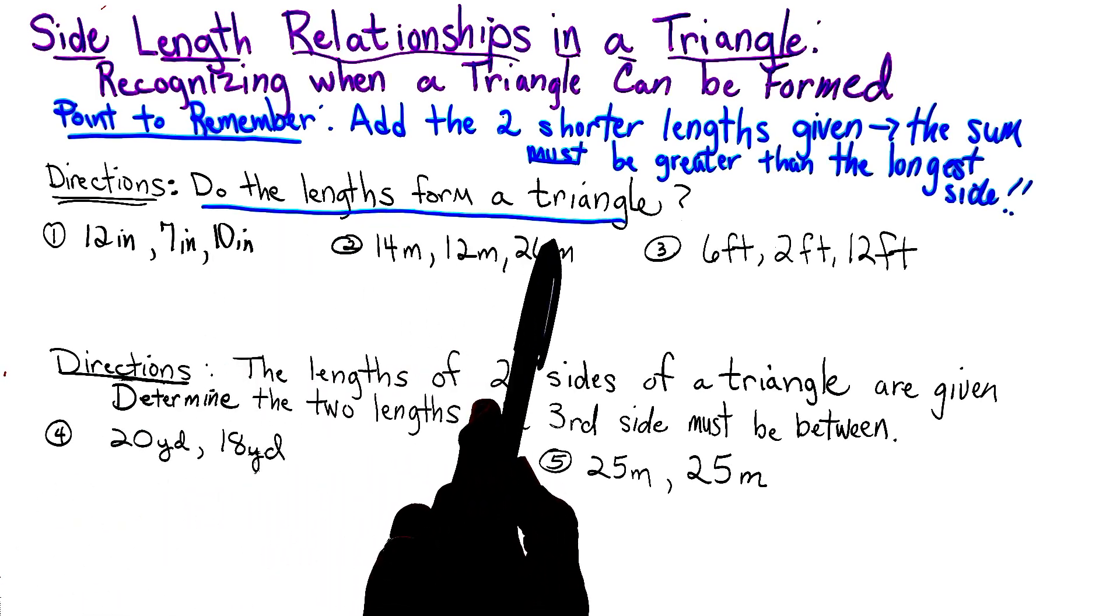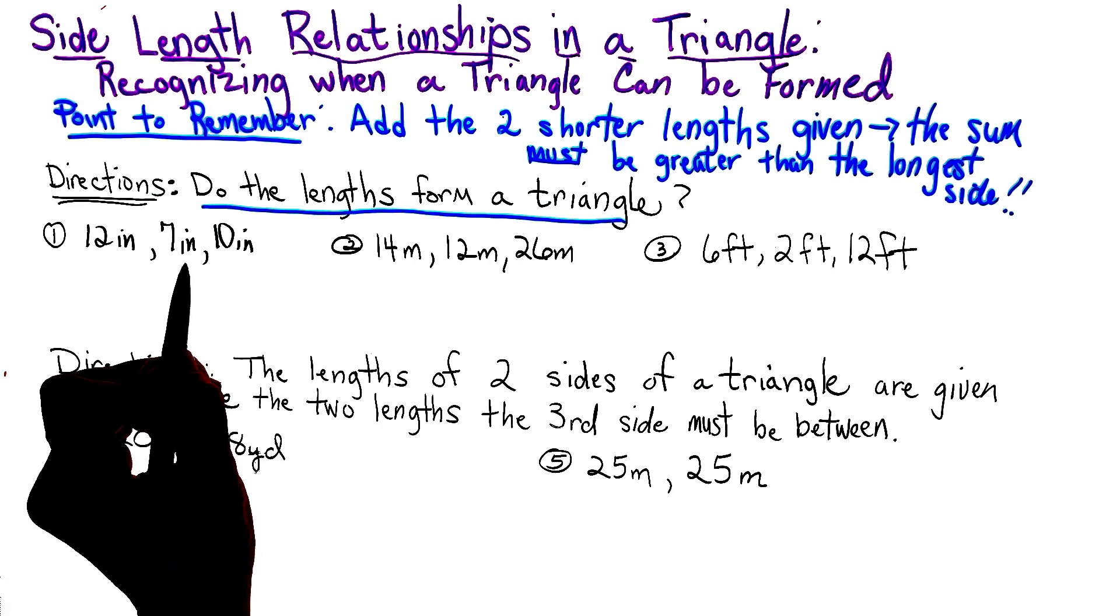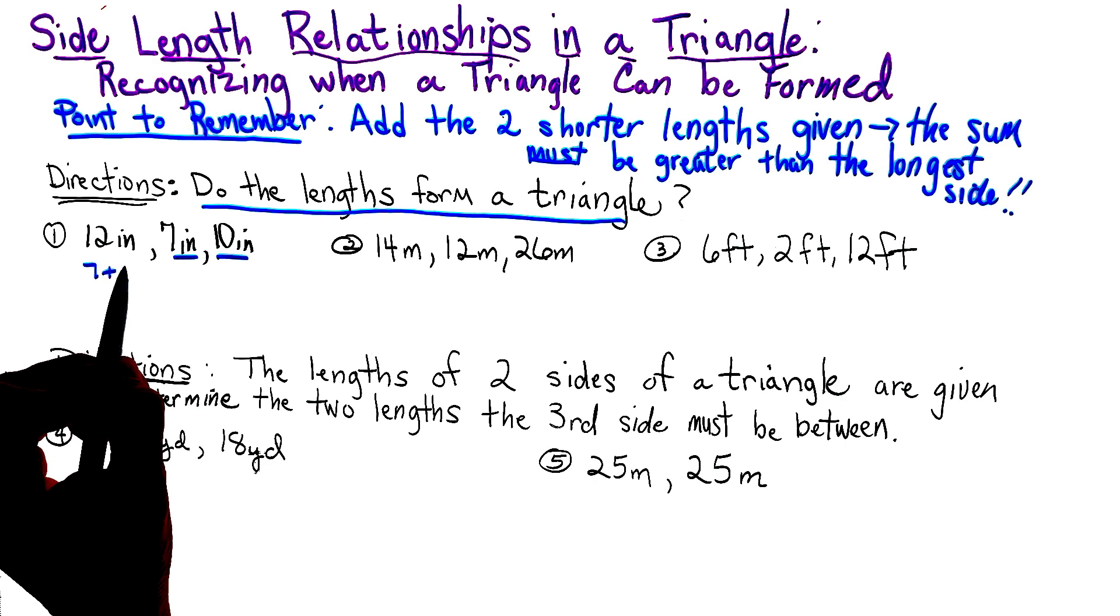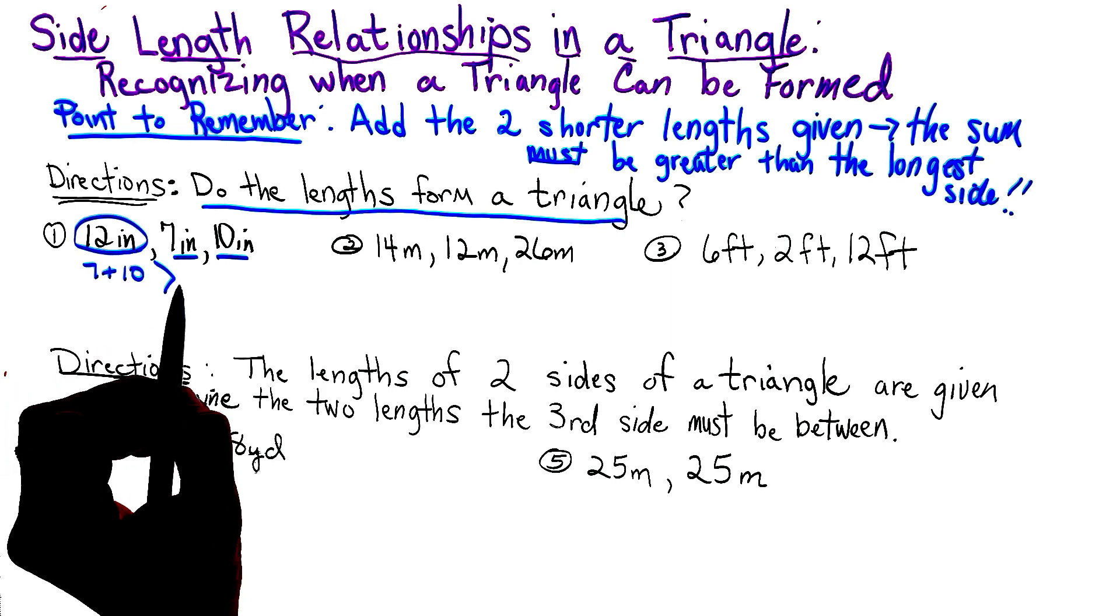So let's look at the directions. Do the lengths form a triangle? So we're going to say yes or no for our answer. So I'm going to take my two shorter lengths, and I'm going to say 7 plus 10, and that must be greater than the longest side that's given.